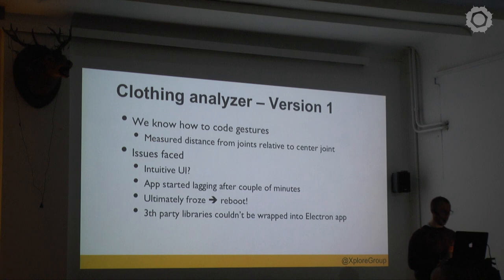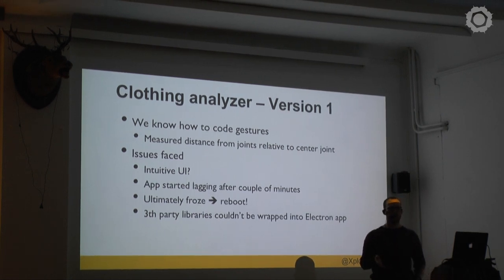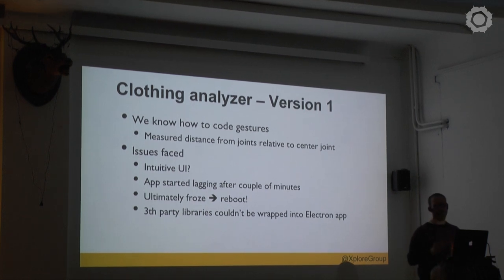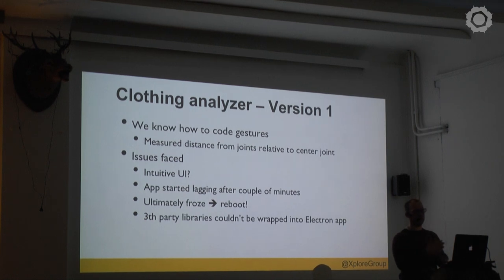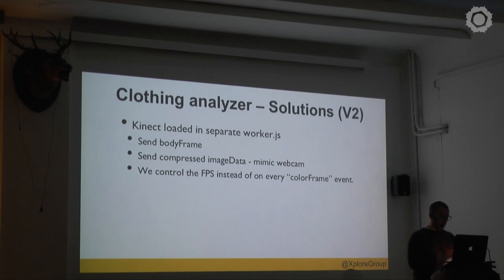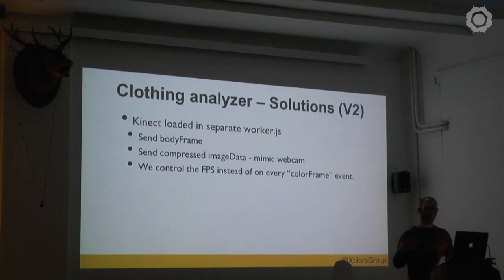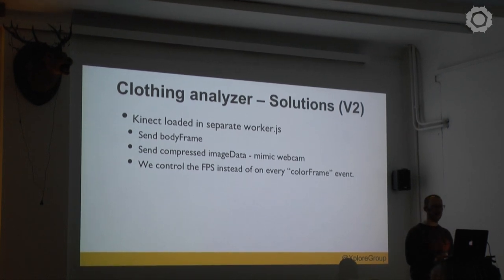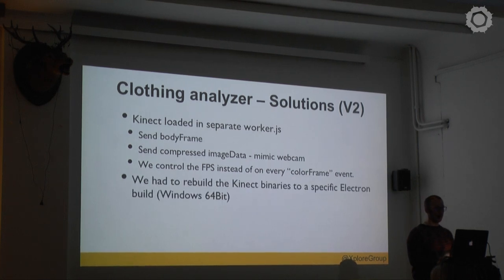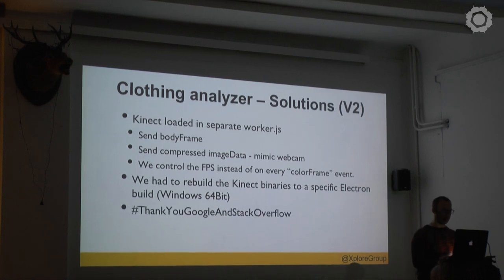The third-party libraries couldn't be wrapped in an Electron app. Electron basically wraps a React or Angular or whatever application into a standalone application — an exe or dmg — and it runs like a piece of software. For version two, we loaded the Kinect into a separate Worker JS. It still sent the body frames, but we mimicked it like it was a webcam and took control over the frames per second instead of listening to the color event — and that fixed a lot of our bugs. We also had to rebuild the Kinect binaries to the specific Electron build, which took quite some time, but thank god for Google and Stack Overflow.